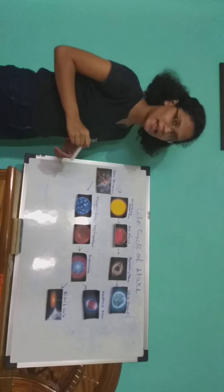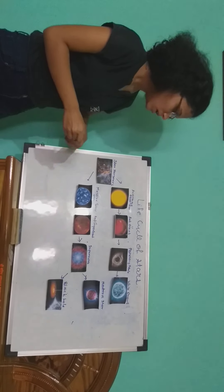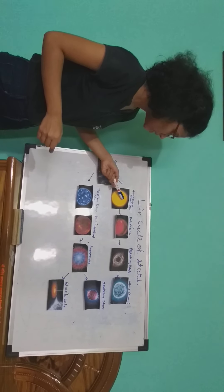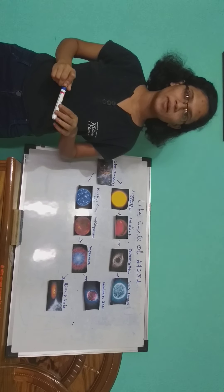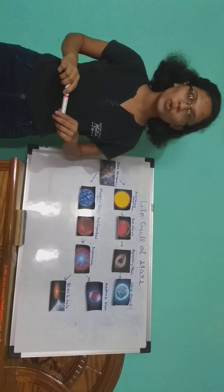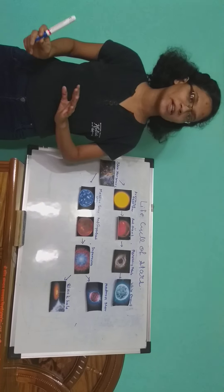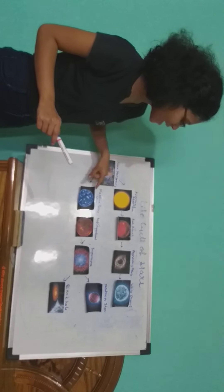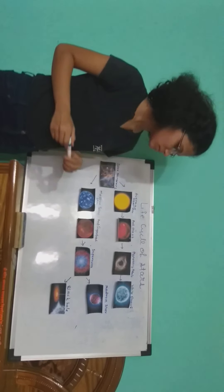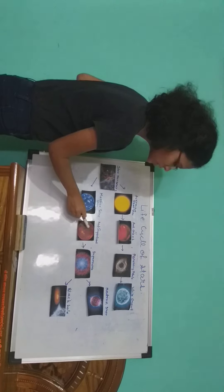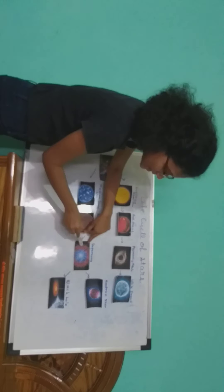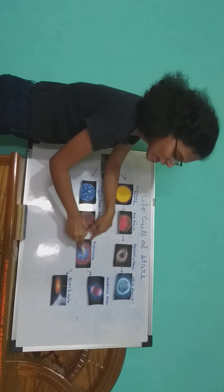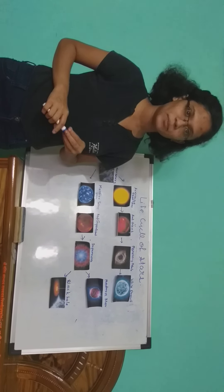Now let's move on to the second type — the massive size star. Similarly, the massive size star is going to get converted into a red giant, but not just a red giant — it is a red supergiant, because it varies in size. After the red supergiant, it's going to get converted into a supernova. We can see glowing gases splitting out with only a core left inside.